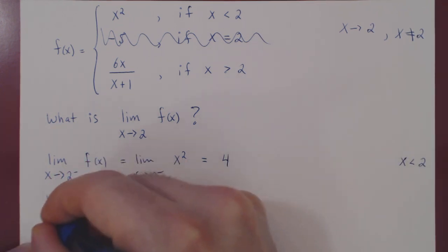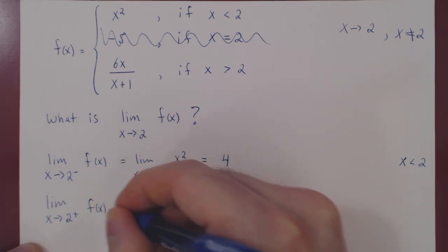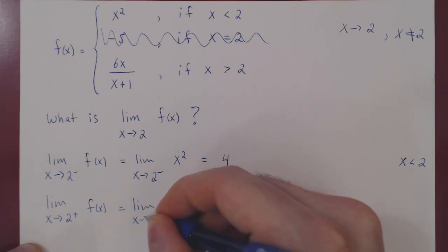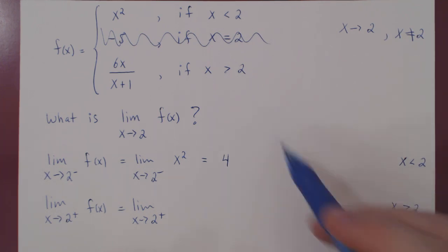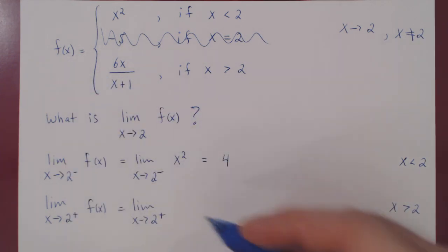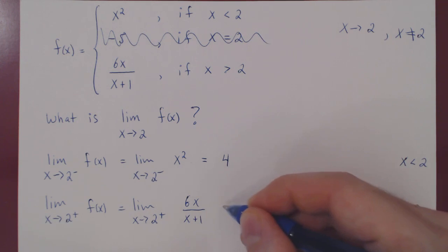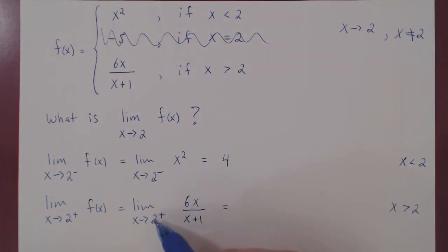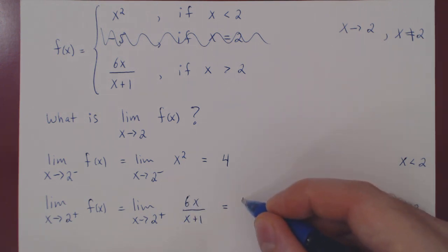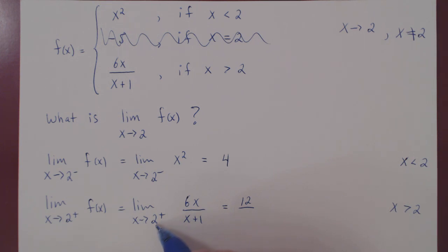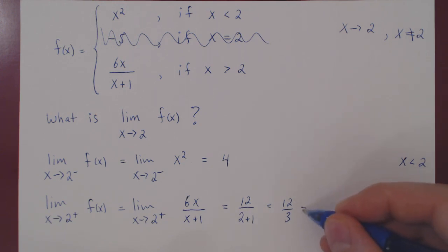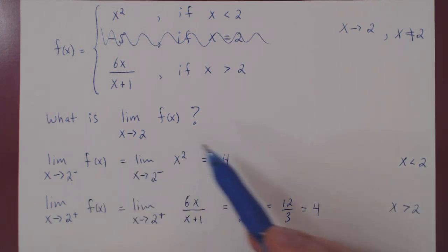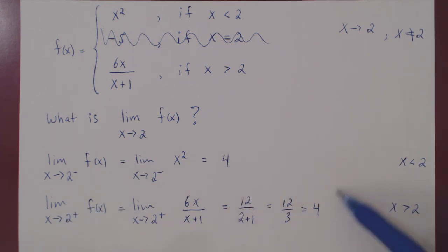What about the limit from the right? As x approaches 2 from the right-hand side, x is slightly larger than 2, so we use f of x equals 6x over x plus 1. As x approaches 2, 6 times x approaches 6 times 2, which is 12. And x plus 1 approaches 2 plus 1, which is 3. So we get 12 over 3, which is 4. The limit from the left exists and equals 4; the limit from the right also exists and also equals 4.